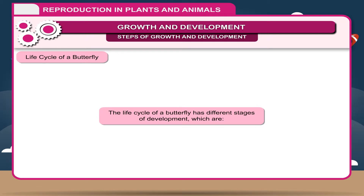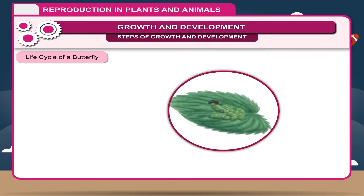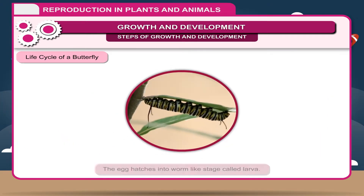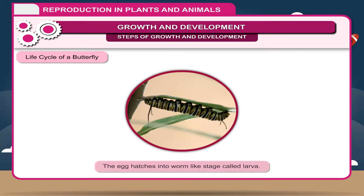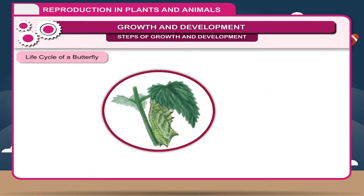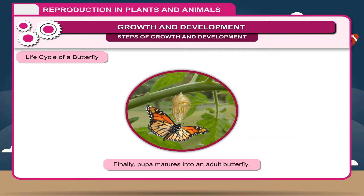The life cycle of a butterfly has different stages of development: 1. Laying of eggs. 2. The egg hatches into a worm-like stage called larva. 3. The larva increases in size to form pupa or chrysalis. 4. Finally, the pupa matures into an adult butterfly.